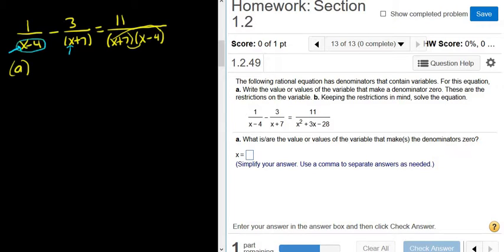Another way to tell is you just take the bottom and you set it equal to 0. And if you do that, you can just solve for x. So you get x equals 4, and here you get x equals negative 7. And so these are the values of x that make the denominator 0.